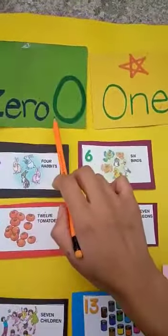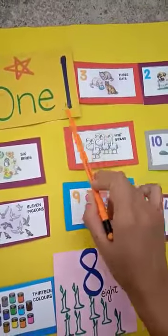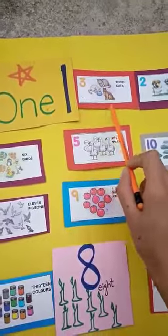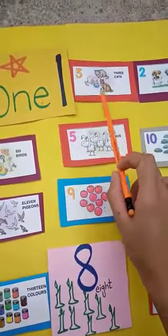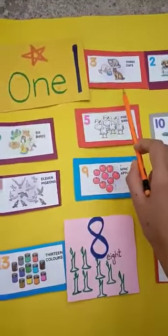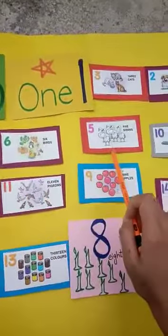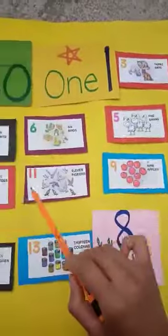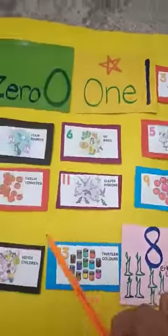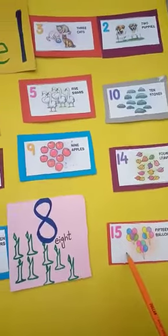First of all, we have a number sequence. Zero, one, three — oh, one comes after two, not after three. We have numbers in sequence: two, four, six, five, ten, twelve, eleven, nine, fourteen, seven, thirteen, eight, fifteen.